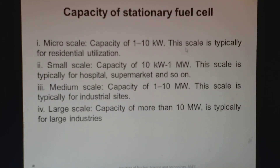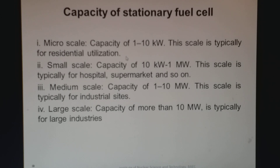Regarding the capacity of stationary fuel cells, there are different categories: micro scale, small scale, medium scale, and large scale. Micro scale capacity is normally 1 to 10 kilowatt and is typically for residential use, since residents do not need much power. Small scale capacity ranges from 10 kilowatt to 1 megawatt and is typically for hospitals, supermarkets, and similar facilities, which require higher power than a residential flat.